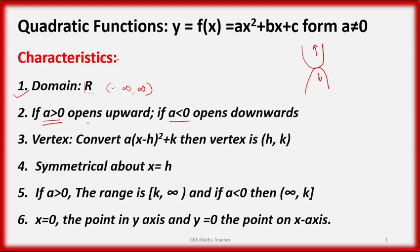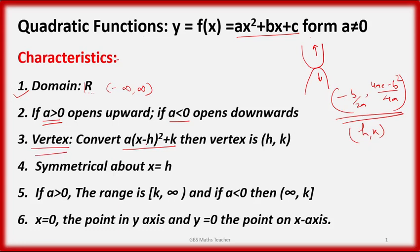The vertex can be found using minus b over 2a. To find the vertex, you can transform it to a(x minus h) squared plus k form. This gives you the vertex at (h, k) for the parabola or quadratic function.